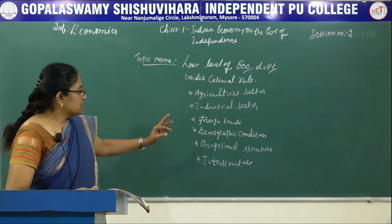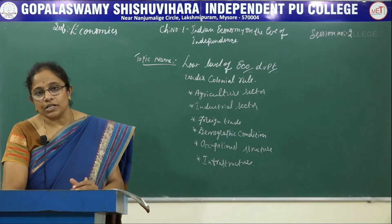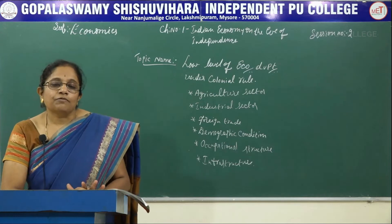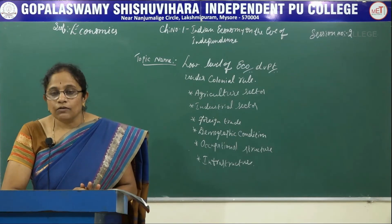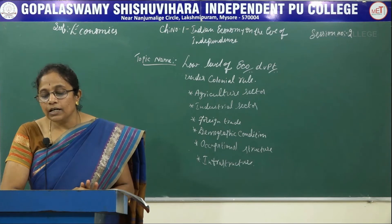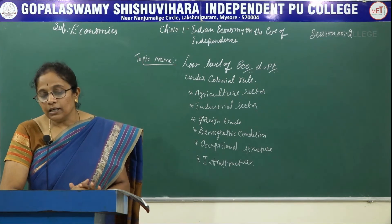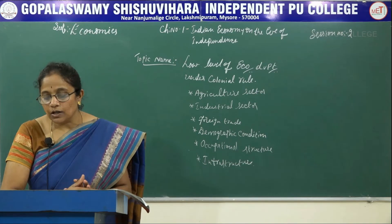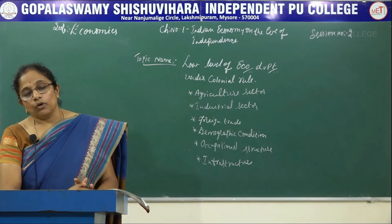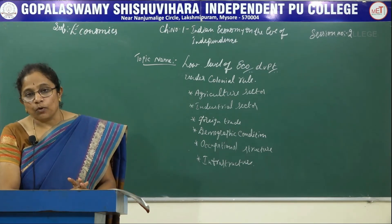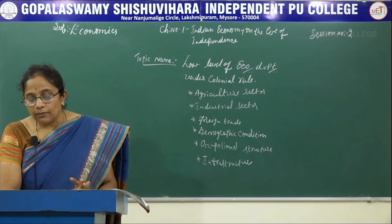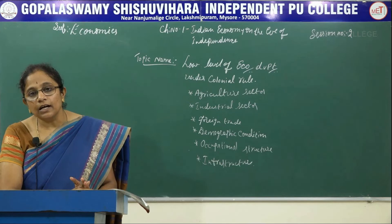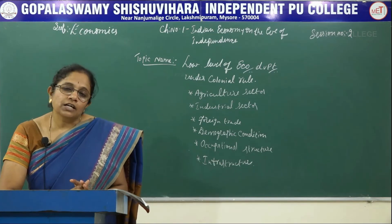Now let us move towards the causes for the failure of foreign trade during the colonial period. The foreign trade was affected adversely and whatever we were exporting was also stopped. Indian exports were primarily of raw silk, cotton, wool, sugar, and jute. Britain had a monopoly control over Indian exports. Export income was used to spend on the office maintenance of Britain companies in England. All these led to the drain of Indian wealth.